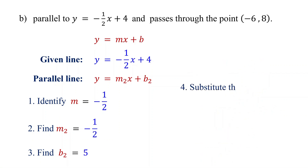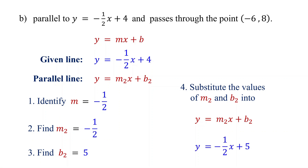Finally, substitute the values of m2 and b2 back into y equals m2x plus b2. Replace m2 with negative 1 half and b2 with 5. This is the equation of the parallel line in slope-intercept form.